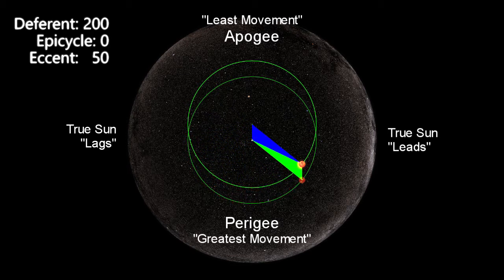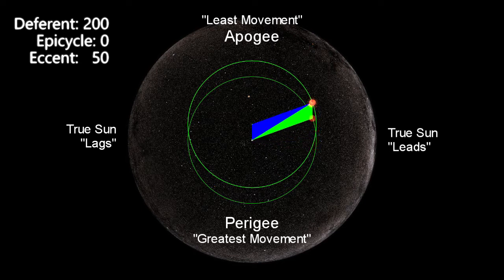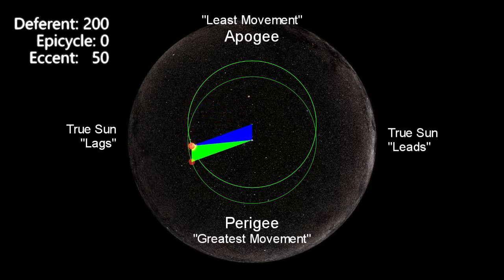This is the greatest movement in the eccentric circle model, where the true Sun speeds up and passes the mean Sun, while near the apogee it experiences the least movement, as it slows down and allows the mean Sun to catch back up.